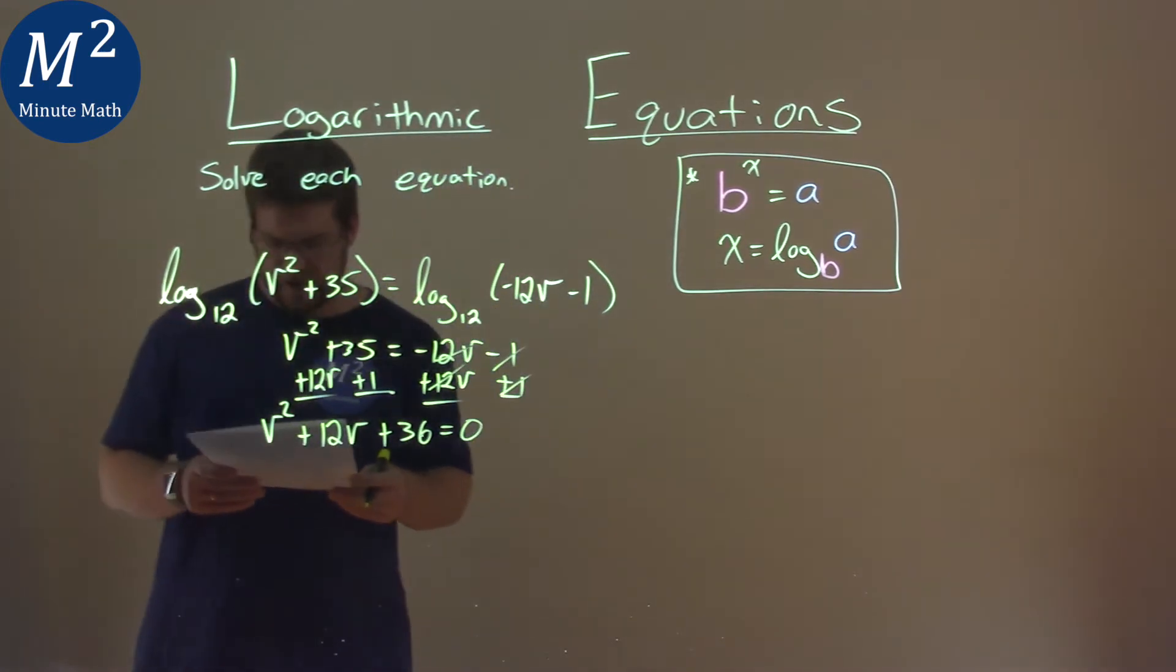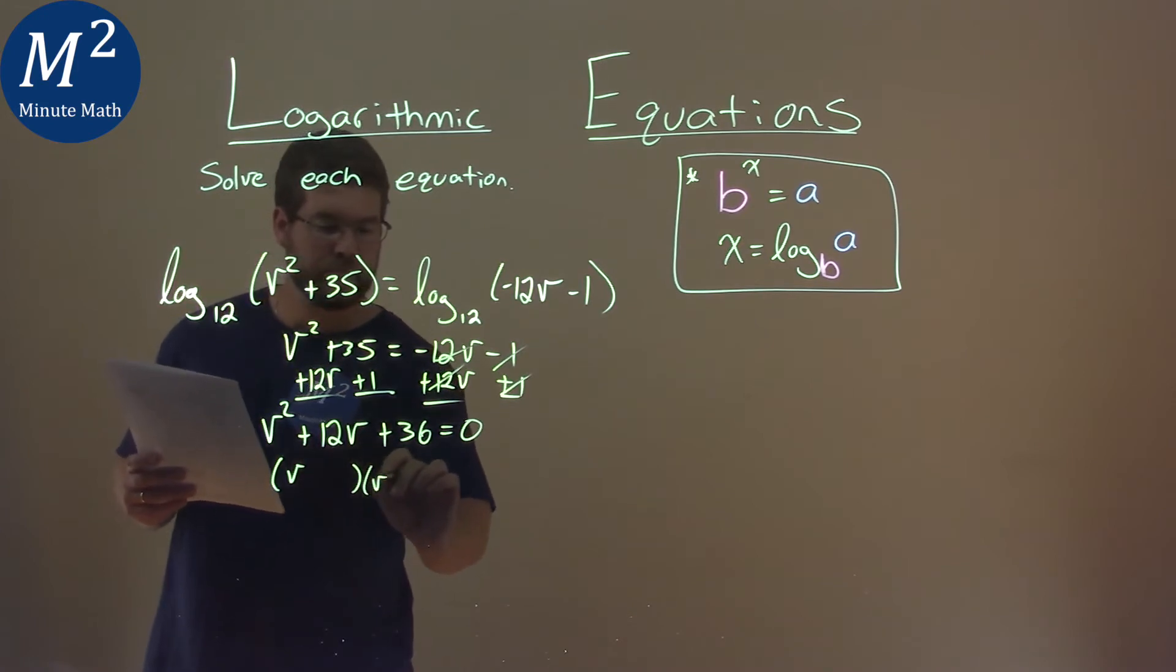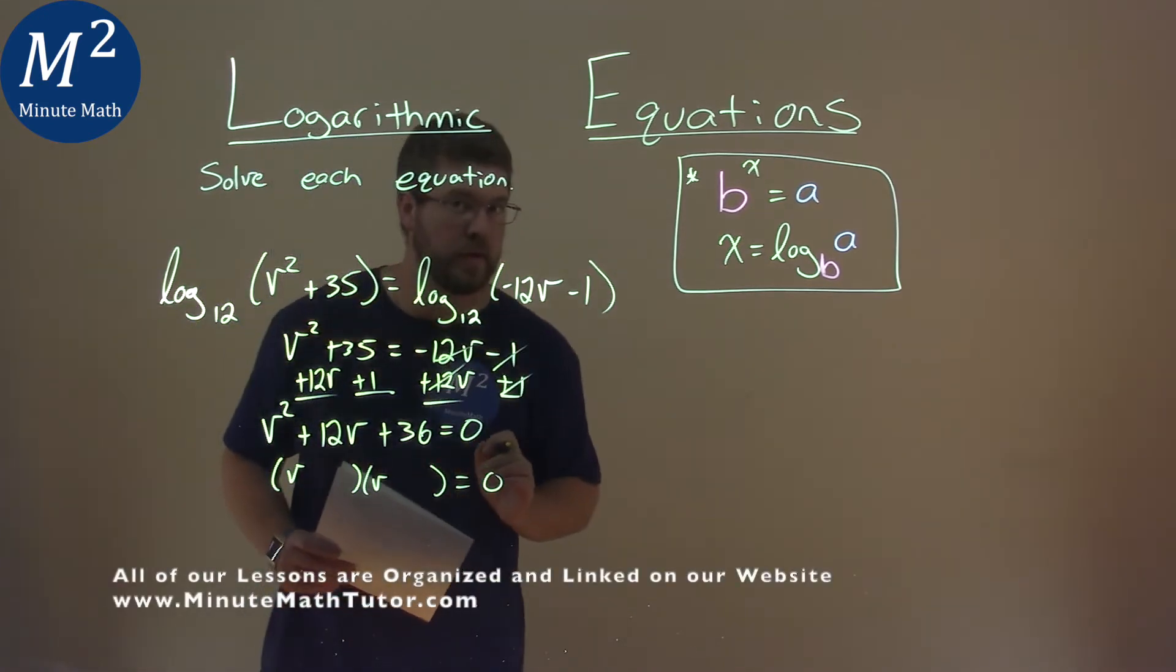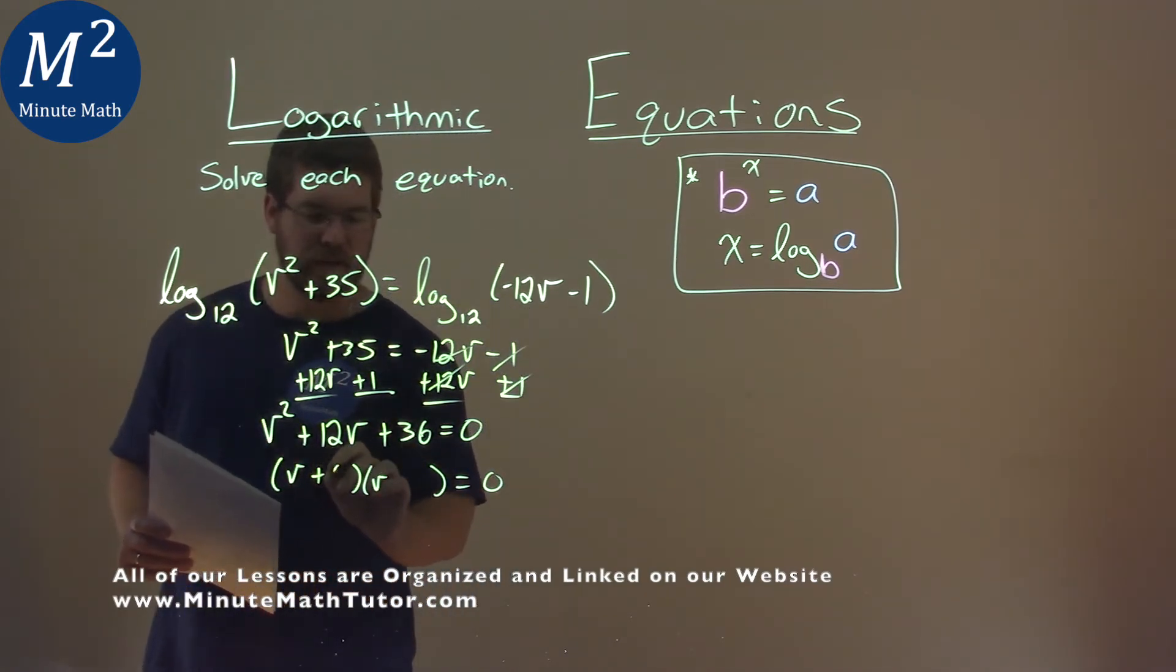This actually factors pretty easily. We use our factored form. What two numbers multiplied to be 36, but added to be 12, and that's 6 and 6.